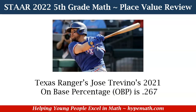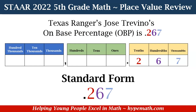Let's look at our first sample problem as we review decimal place value. Texas Rangers' Jose Trevino's 2021 on-base percentage is 0.267, or 267 thousandths. Let's see how it looks in standard form and also on our place value chart. On our place value chart, we see that the 2 is in the tenths place, the 6 is in the hundredths place, and the 7 is in the thousandths place.